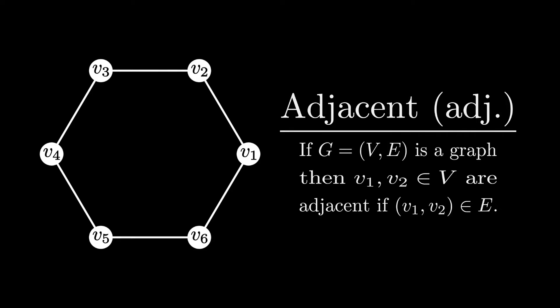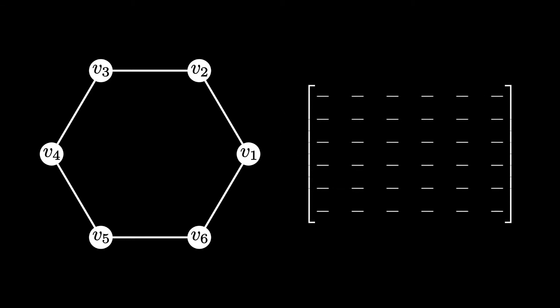Using this new concept, we plan to create a matrix. Specifically, each dash that you see in the matrix right now is going to turn into a 0 or a 1. To help us, what we want to do is label the rows and the columns using the vertex labels defined.